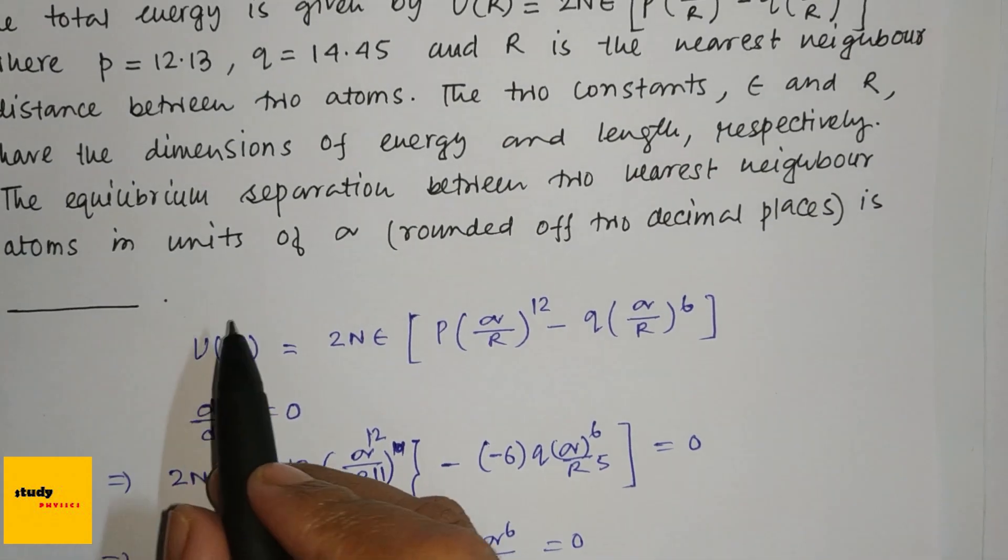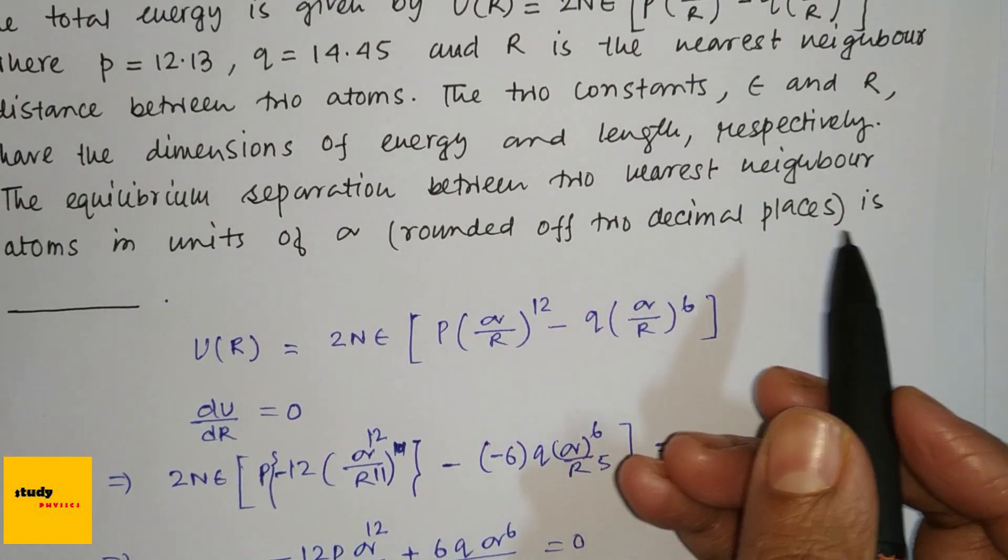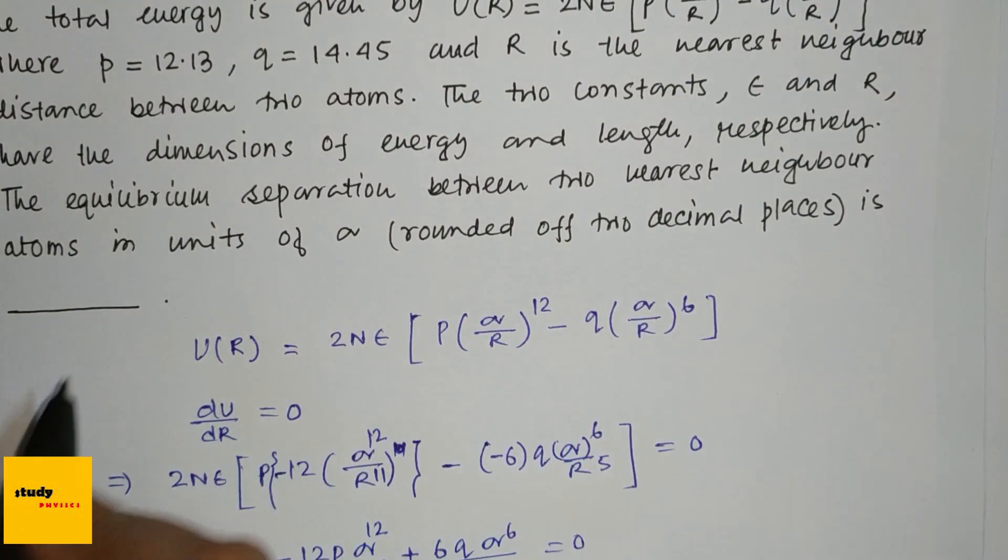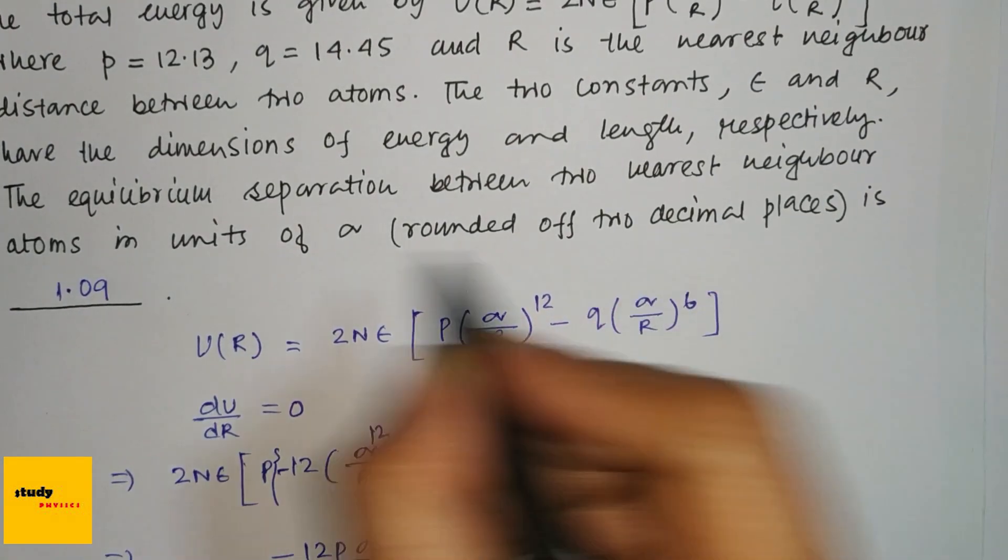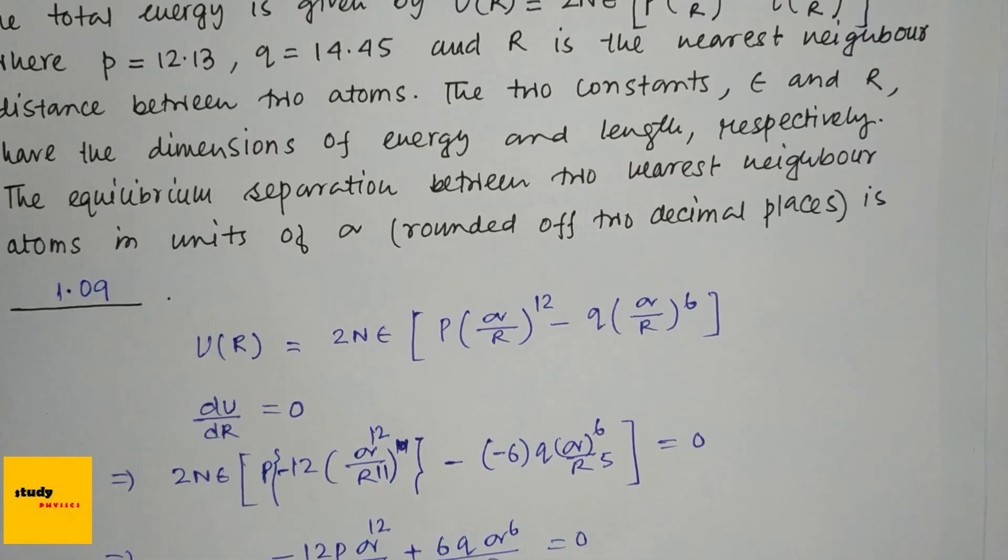So the equilibrium separation between two nearest neighbor atoms in units of σ is 1.09. Thank you for watching this video. Please like, share, and subscribe.